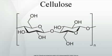Cellulose is the most abundant organic polymer on Earth. The cellulose content of cotton fiber is 90%, that of wood is 40 to 50%, and that of dried hemp is approximately 45%. Cellulose is mainly used to produce paperboard and paper. Smaller quantities are converted into a wide variety of derivative products such as cellophane and rayon. Conversion of cellulose from energy crops into biofuels such as cellulosic ethanol is under investigation as an alternative fuel source. Cellulose for industrial use is mainly obtained from wood pulp and cotton.